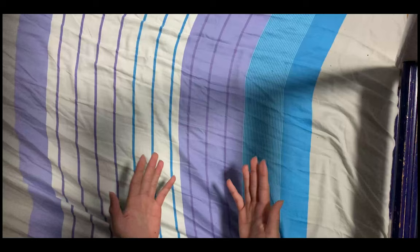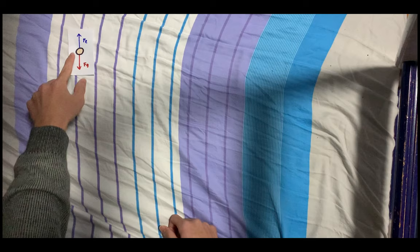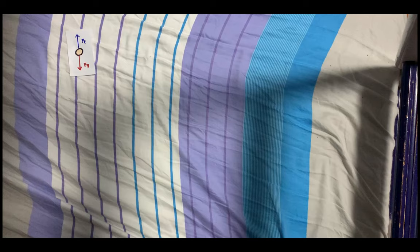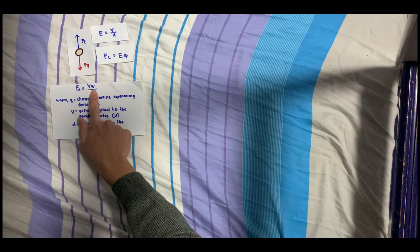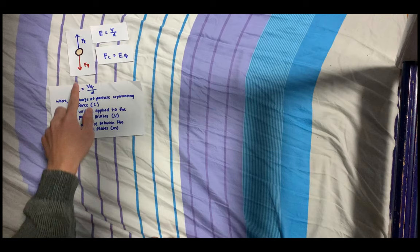So what were the calculations that they did? First off, by suspending the oil droplet in mid-air, they know the electric force going upwards equals the gravitational force going downwards. To find the electric force in terms of variables they know, they used the formula of the electric field strength between two parallel plates and substituted it into the electric force formula to get this equation: Fe = Vq/d. Note that they know V and d, but they don't know q and that's what they're trying to find. The gravitational force equals the weight of the oil droplet, which equals mg.